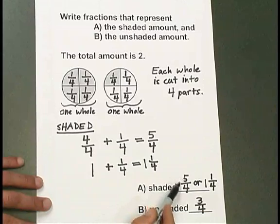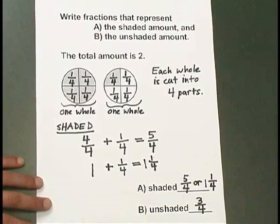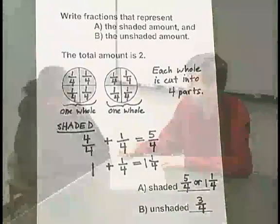5 fourths, however, our answer to A, is more than 1 whole. It can also be written as a mixed numeral, 1 and 1 fourth.